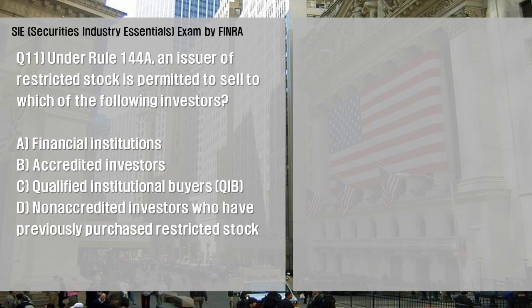Under Rule 144A, an issuer of restricted stock is permitted to sell to which of the following investors? A: Financial Institutions; B: Accredited Investors; C: Qualified Institutional Buyers (QIB); D: Non-Accredited Investors who have previously purchased restricted stock.